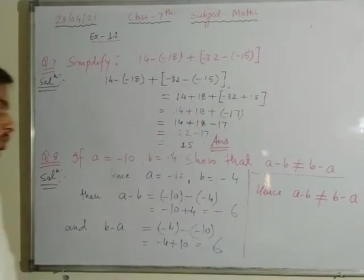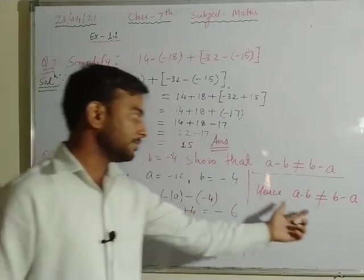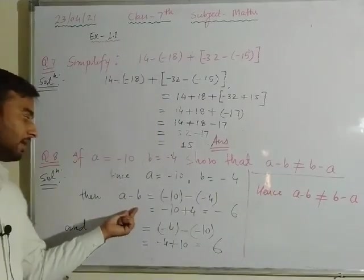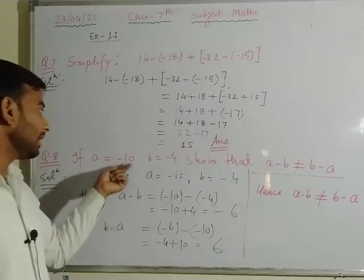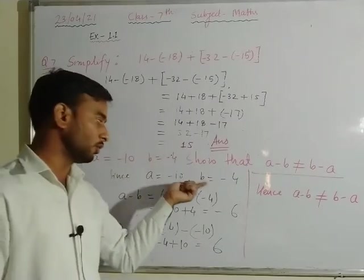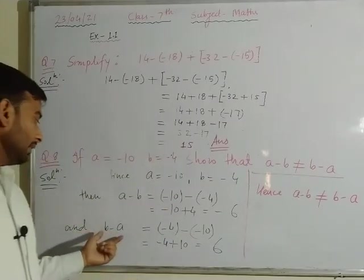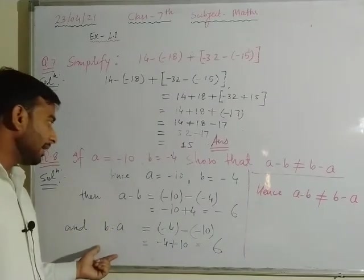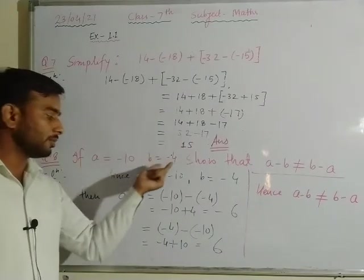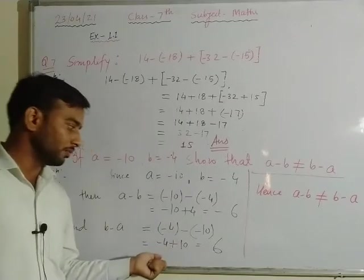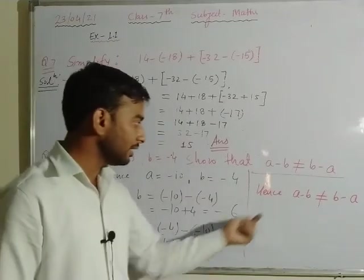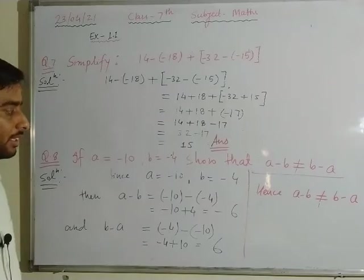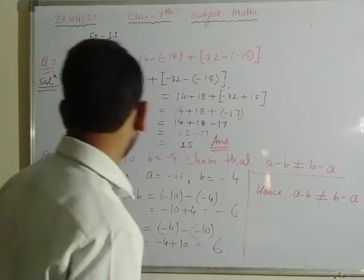We needed to show that a minus b is not equal to b minus a. So first we found the value of a minus b at a equals minus 10 and b equals minus 4, and then we found b minus a at the same values. Since both values are different, a minus b is not equal to b minus a.